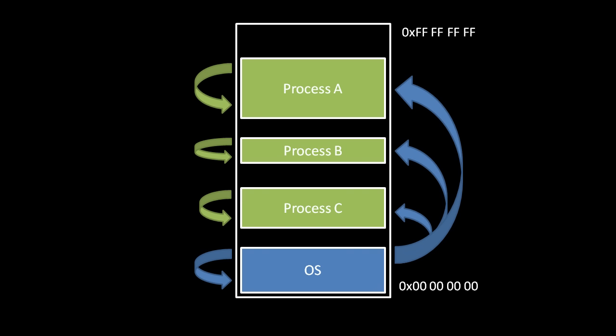For example, processes A, B, and C have been allocated their own portions of system memory. While the OS may access any portion of memory as it chooses, because the OS is supposed to be in charge of the system, each process can only access its own portion of memory.